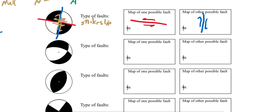We have the type of the fault, we have the maps, and now we need to show N, P, and T. We know N, and the primitive circle becomes the profile plane, so one axis point is here and the other is here. The black segment is the area experiencing compression and the white zone is experiencing dilation. The P axis must be in the dilation zone, so P goes here and T here. Because P and T sit on the primitive circle, you can show them in both directions.